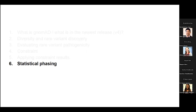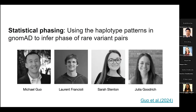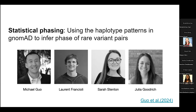Now briefly on statistical phasing — mostly work done by Michael, Laurent, Sarah, and Julia. The goal is to use haplotype patterns in GnomAD to infer the phase of rare variant pairs. There are two goals: first, to produce a tool for the medical genetics community to phase variants found in their patients; and second, to produce a resource counting rare variant co-occurrence in GnomAD by functional consequence.